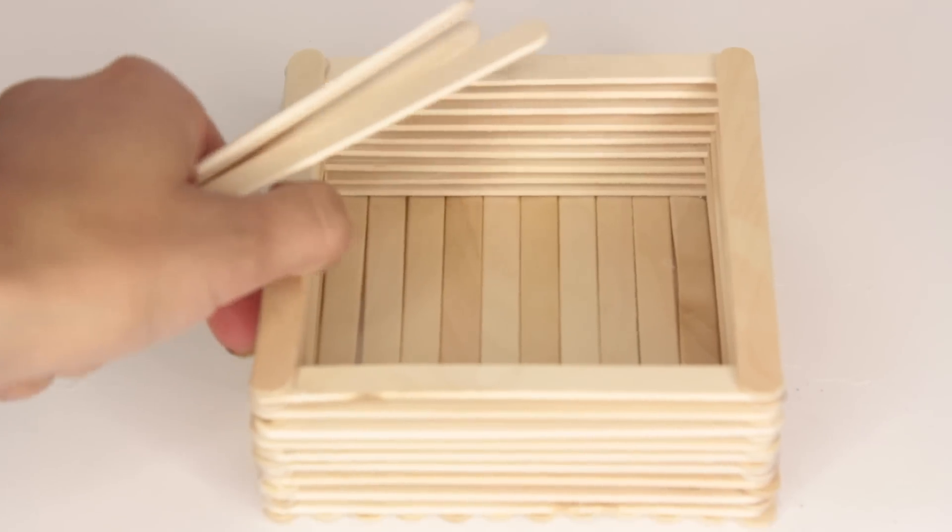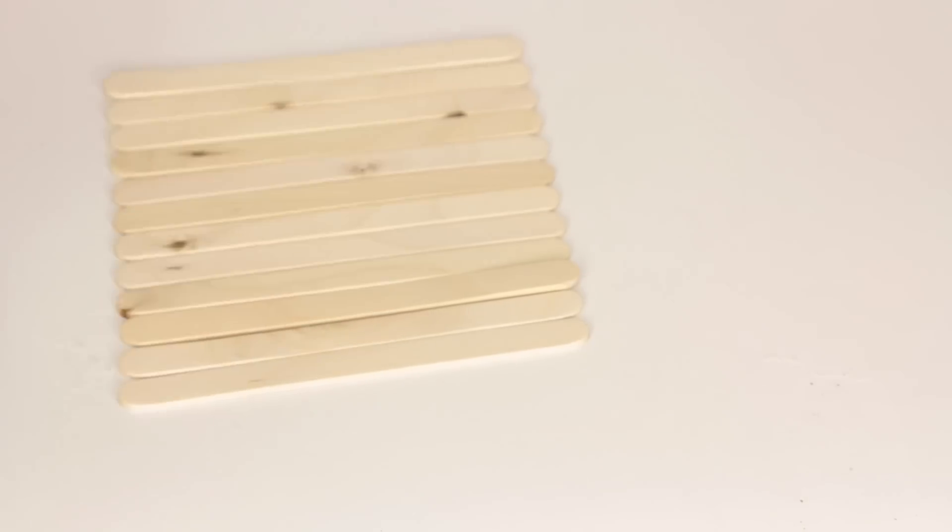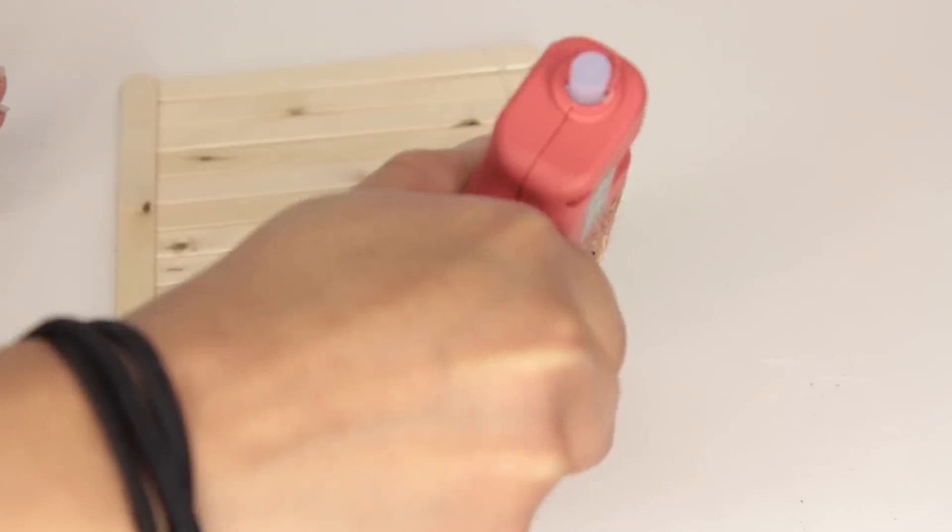Now you'll be making four sides to the box. Again, you're going to lay out the popsicle sticks so they make up the same width of one popsicle stick laying parallel.